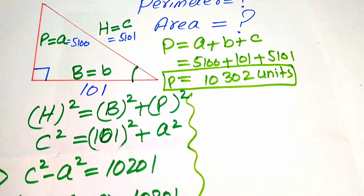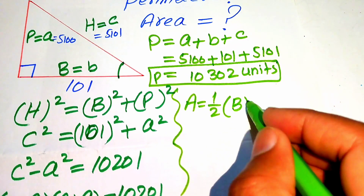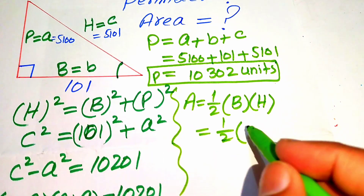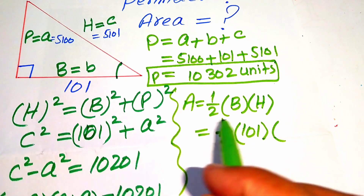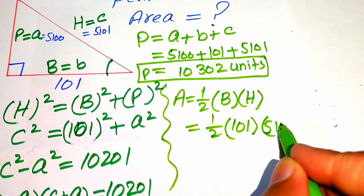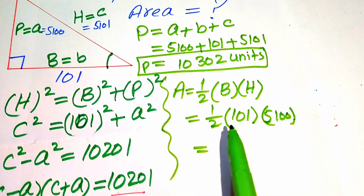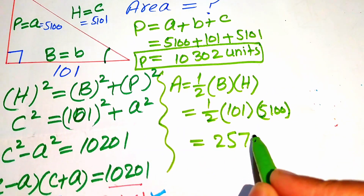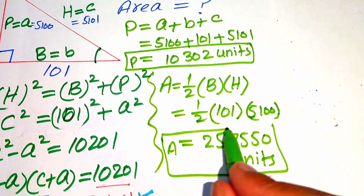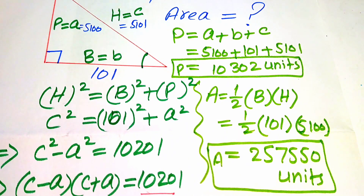Now we find the area of the triangle. The formula for the area of a triangle is one-half times base times height. Our base b is 101, and our height — note that h here denotes height, not hypotenuse — is 5100. Multiplying these values and dividing by two gives us 257,550 square units. This is the area of the right triangle and the final answer. Thank you for watching — please subscribe to my channel for more exciting videos.